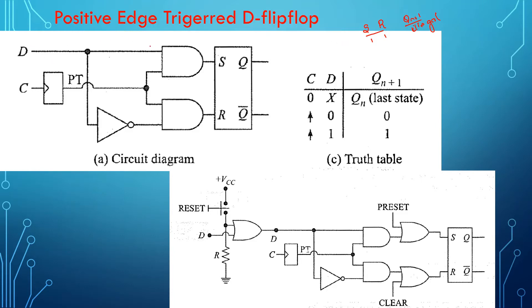Whenever D is equal to 0, one input is 0 and the other is 1. Whenever D is equal to 1, one input is 1 and the other is 0. So '0,0' and '1,1' cannot occur in the D flip-flop. The clock input is shorted and given to both inputs of the AND gate. A positive edge is indicated by a triangle, while a negative edge has a bubble ahead of the triangle indicating the clock input is negated.